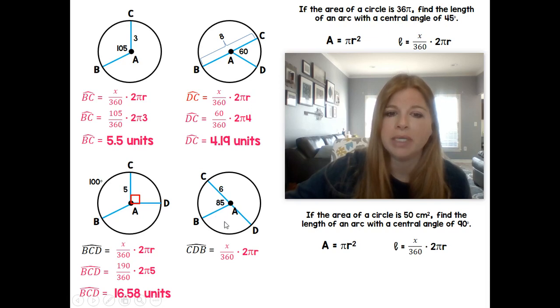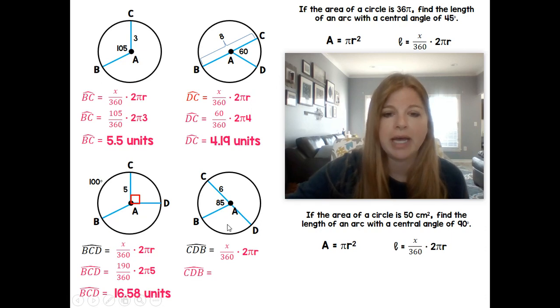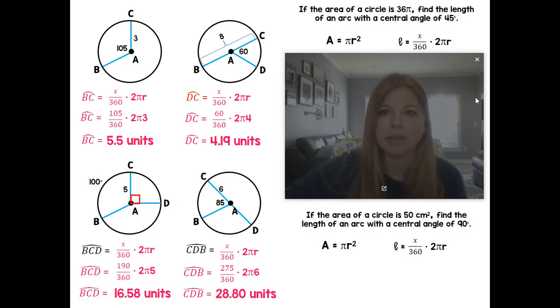And then from here, this is 180. And 180 minus 85 would give me 95. So if I add 180, this arc here, plus 95, I get 275 times 2 times π times 6. And you should be able to get 28.80 units.